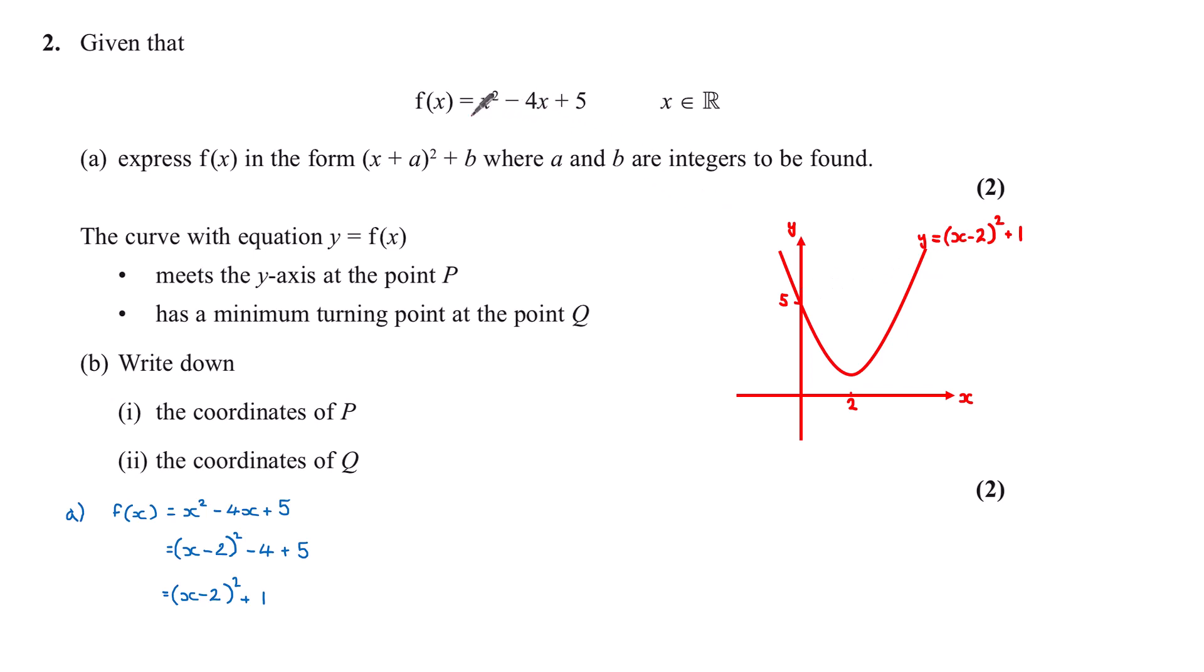When x is 0 here, I can see quickly that the y-value is 5. And I know that when completing the square, this gives me the coordinate of my turning point.